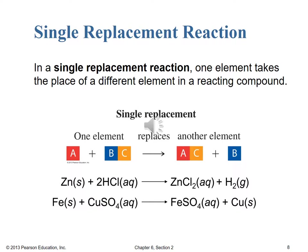Moving into our next reaction type: single replacement reactions. In a single replacement reaction, one element takes the place of a different element in a reacting compound. On the left-hand side, we have a given element plus a given compound, and on the right-hand side we produce a new element and a new compound. For example, zinc metal reacts with hydrochloric acid to yield zinc chloride solution and hydrogen gas. Similarly, elemental iron plus copper(II) sulfate solution forms iron(II) sulfate and copper metal as the product — one element displaces and replaces another.